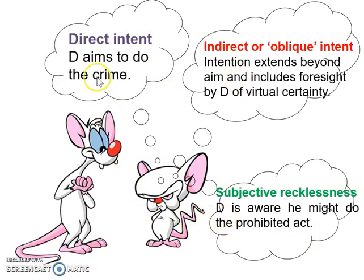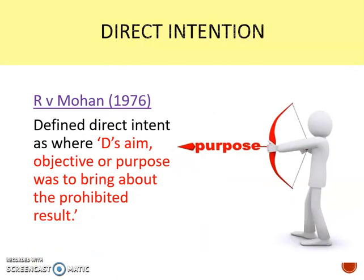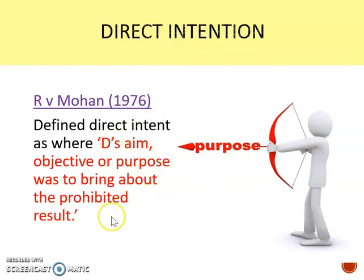Let's start by looking at direct intention more closely. Direct intent is where the defendant embarks on a course of conduct to bring about a particular result which occurs. I gave the example of hating someone, getting a gun, and shooting them dead — that would be direct intention. We have a useful definition from the case of Mohan, where the court defined direct intent as where the defendant's aim, objective or purpose was to bring about the prohibited result. Those three key words — aim, objective or purpose — are important to use in the exam.